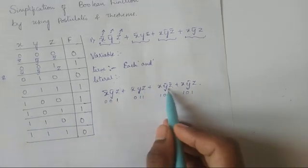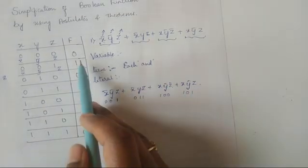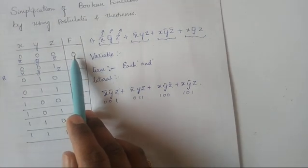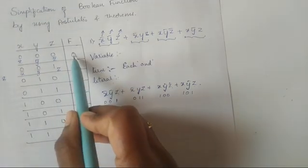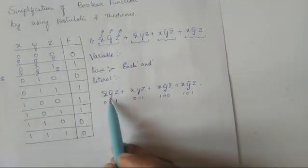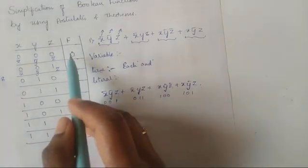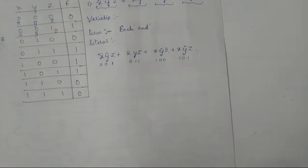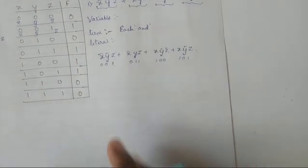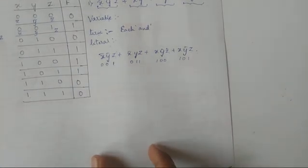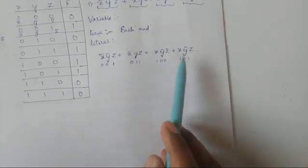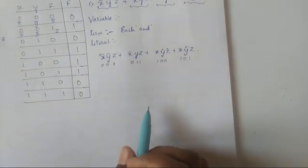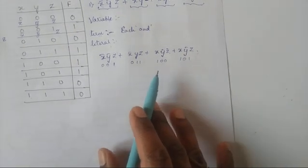For each term we write the output as one. The places where we don't get any one — terms not present in this expression — should be filled with zeros. Now let us start the simplification. For simplification, we first have to group the terms. There are four terms here, and we try to group them such that there is something common between them, so we can use the postulates and theorems to reduce them.